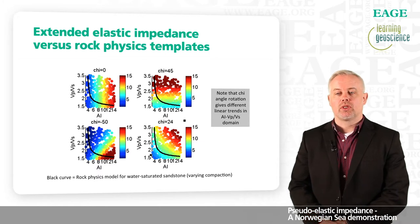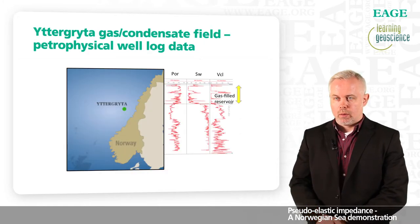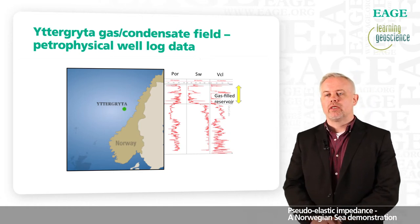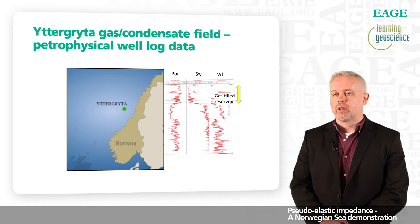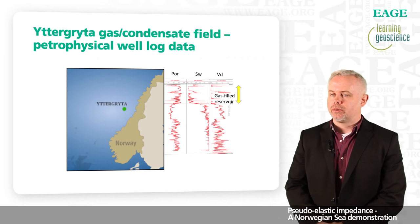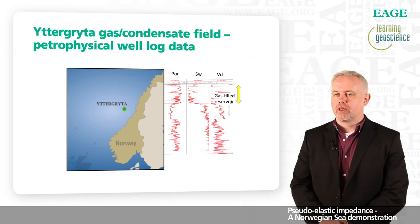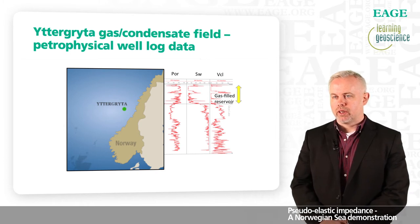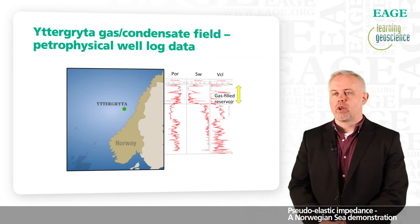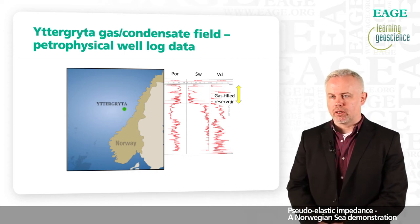I'm going to show how we can do this for a case study from the Ittegreta well — a gas condensate field in the Norwegian Sea. This figure shows a map view of the location offshore Norway, with well-log data including porosity on the left, water saturation in the middle (showing very low water saturation in the gas zone), and V-clay on the right. The gas-filled reservoir is in the upper section of the well-log data.